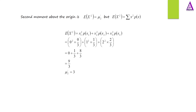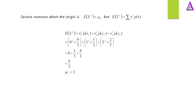The second moment about the origin is the expected value of s squared, equal to 0 squared times 0/3, plus 1 squared times 1/3, plus 2 squared times 2/3. This gives 0 plus 1/3 plus 8/3. Therefore, the second moment about the origin equals 3.